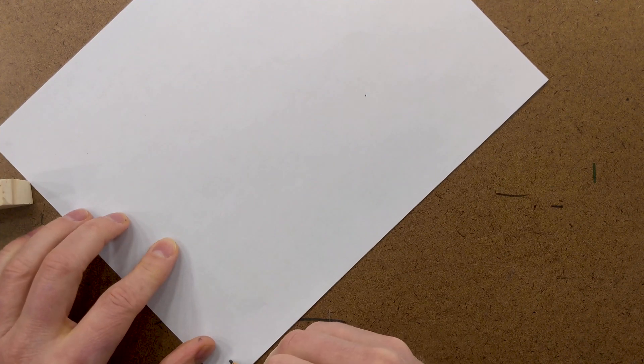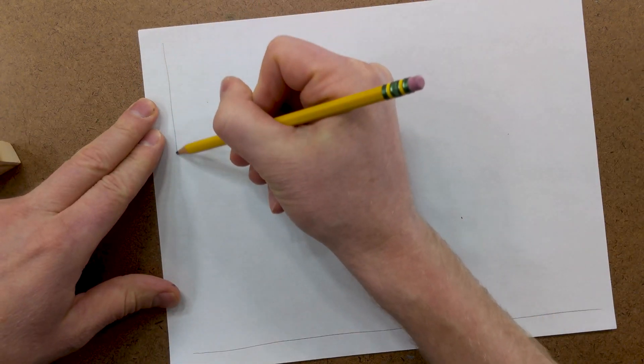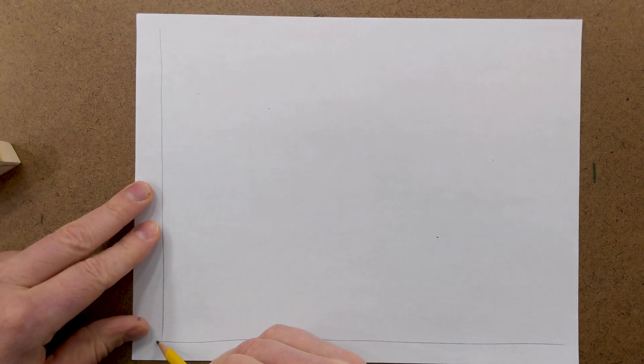So now what we need to do is we need to draw our horizontal line. And we'll draw our vertical line. And we need to draw our 45 degree line.